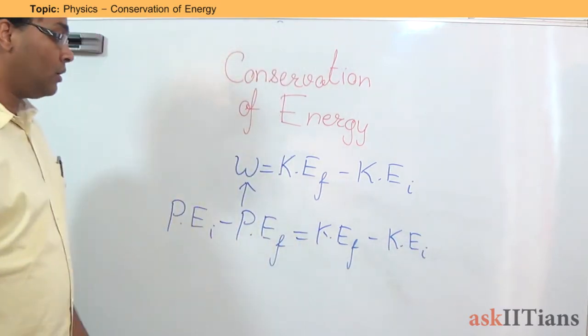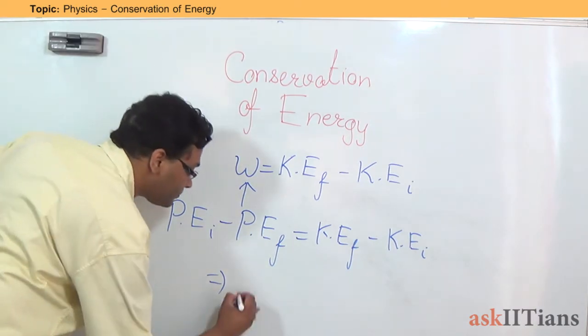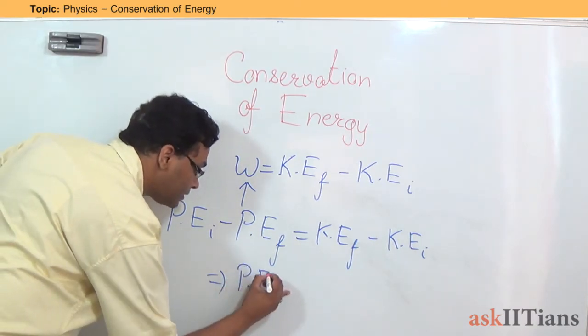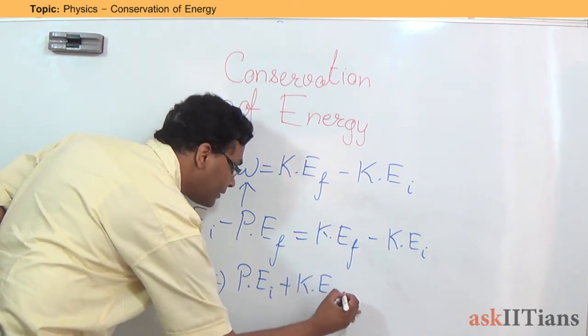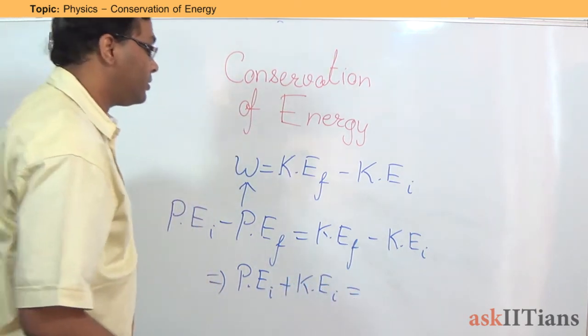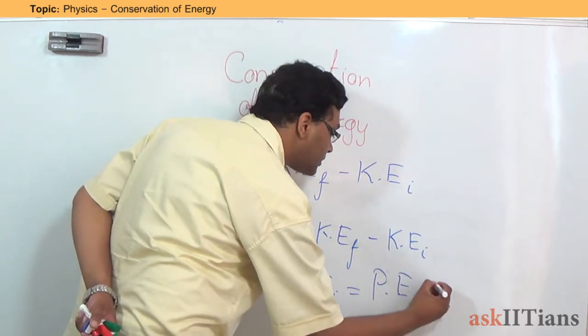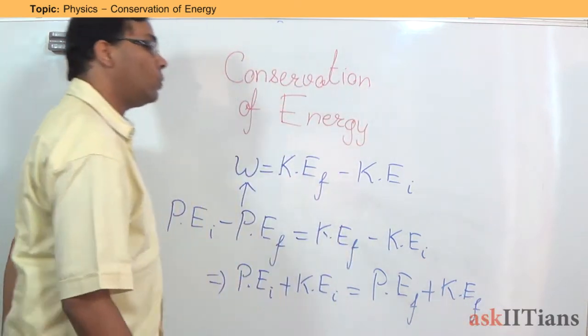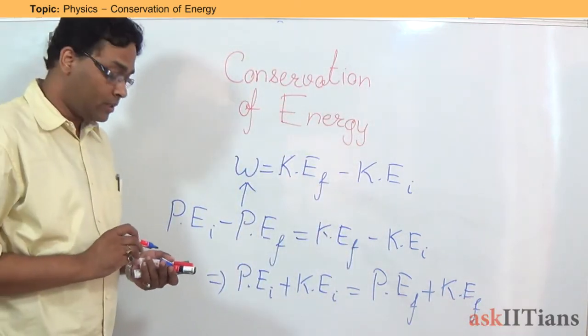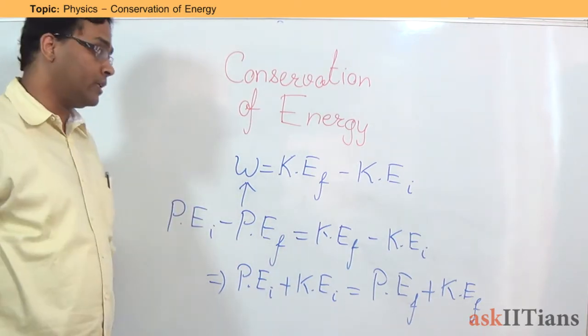Right? So if I just rewrite this, so what will I get? I will get the initial potential energy plus initial kinetic energy, that is going to be equals to final potential energy plus final kinetic energy. Right? So this is the relation that we get. So this is what is meant by the conservation of energy.